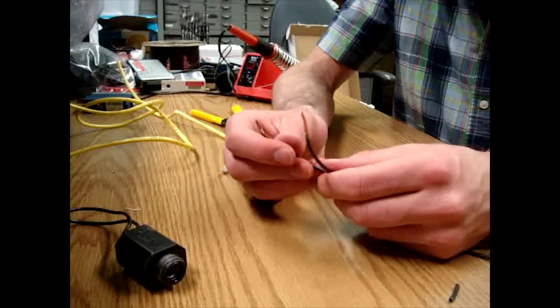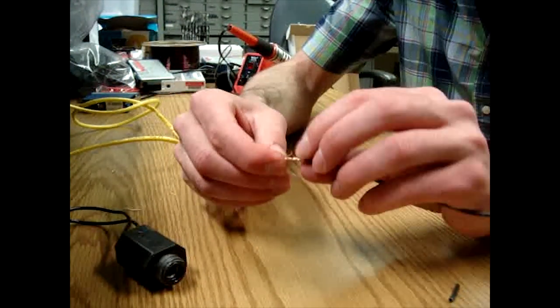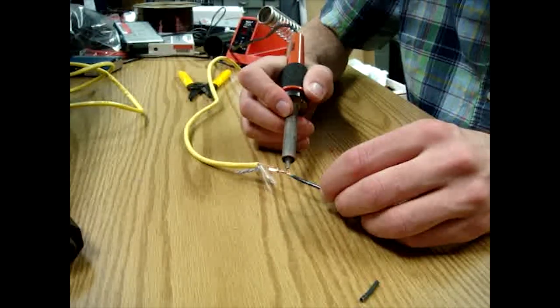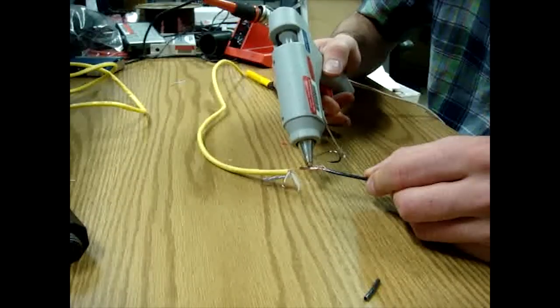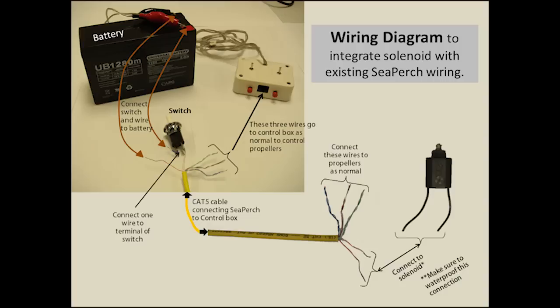Connect your solenoid cables to two of the cables in your CAT5 cable. This connection needs to be waterproofed. So the first thing you will do is solder the wires together. Second, hot glue it and before the hot glue dries, wrap any electrical tape.